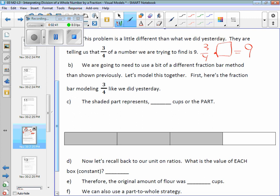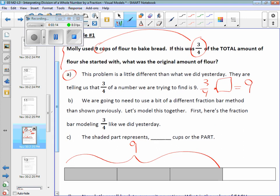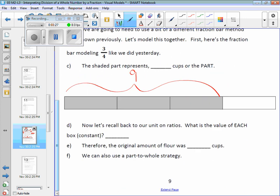How many total pieces do I have? How many are shaded? Three out of four. That's where those three-fourths are coming from. These three pieces that are shaded represent what number? What did I tell you in the word problem? It's connecting with what? The nine. Right? Let me show you where that's coming from. Put the nine here. Molly used nine cups of flour to bake bread. If this nine was three-fourths of the total amount, then this three-fourths is representing nine. Good so far?